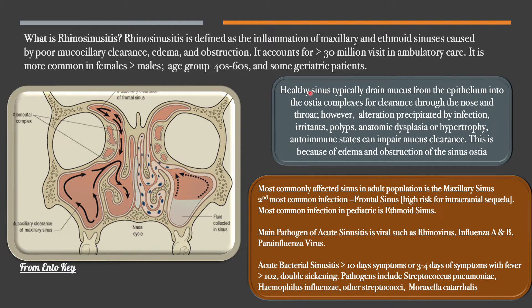Healthy sinuses typically drain mucous from the epithelium into the osteocomplexes for clearance through the nose and the throat. However, alteration precipitated by infection, irritants, polyps, anatomical dysplasia or hypertrophy such as tonsillar hypertrophy, or autoimmune states can impair mucous clearance.